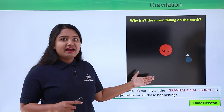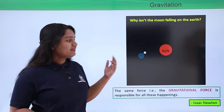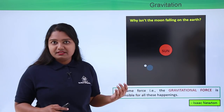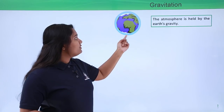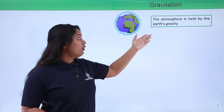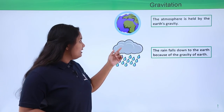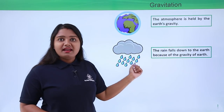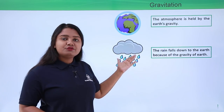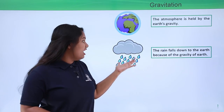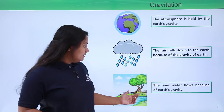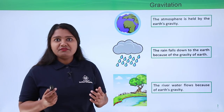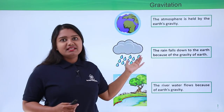There are many phenomena we observe on a daily basis where the earth's gravity is apparent. For example, the atmosphere of the earth is held intact by the force of gravity. Similarly, when it rains, the raindrops fall towards the surface of the earth because of gravity — without it, drops might move in an arbitrary direction. Also, river water flows because of the force of gravity. These are a few phenomena from daily life where we observe the earth's gravity.